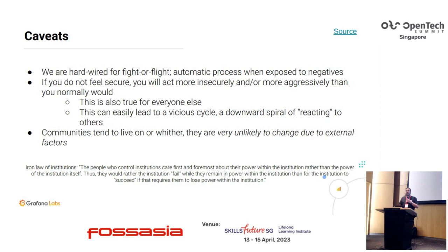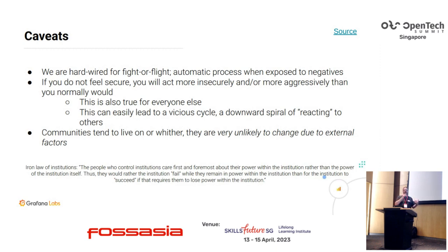Also, the iron law of institutions: anyone in a position of power within any organization is much more likely to defend their position and see the organization wither and die than to give up their power and say it's someone else's time. By extension, communities tend to fade away over time. They are very unlikely to actually change trajectory. It's much more the case that communities simply go away and fade than that they really change what they're about. Speaking from a company level, this is really important — if you have a big migration, doing it in a consistent and respectful manner that actually pulls people with you is exceedingly important to your success.